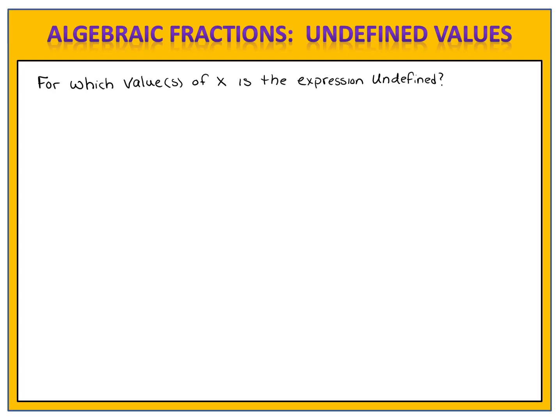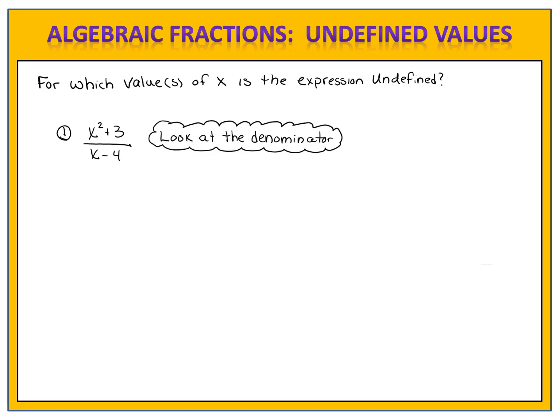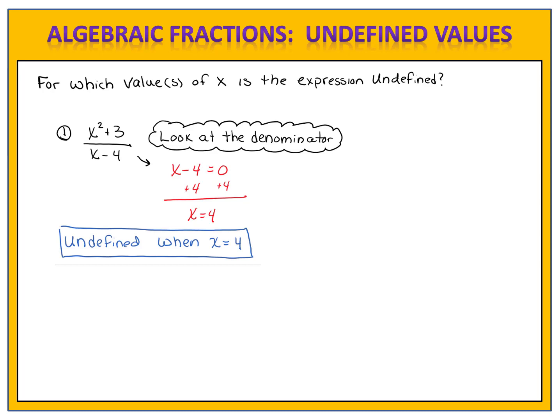For which value or values of x is the expression undefined? Here we have an algebraic fraction: x squared plus 3 divided by x minus 4. We want to know what numbers x could be that would cause division by zero — zero in the denominator. We look specifically at the denominator and make it equal to zero: x minus 4 equals zero. We solve that equation and find that x equals 4. This fraction is undefined when x equals 4.